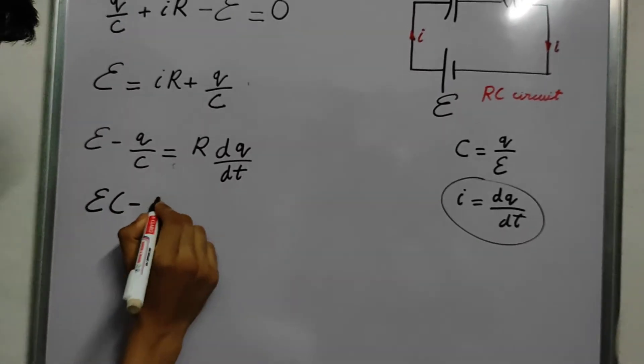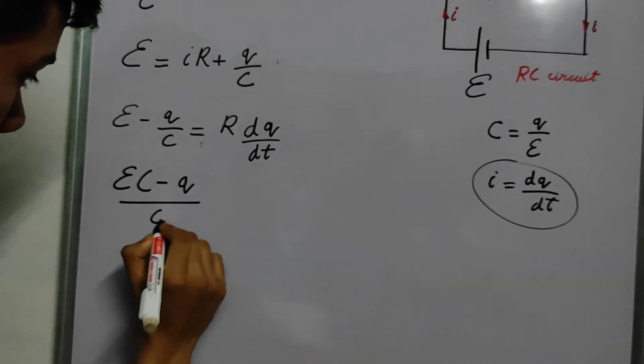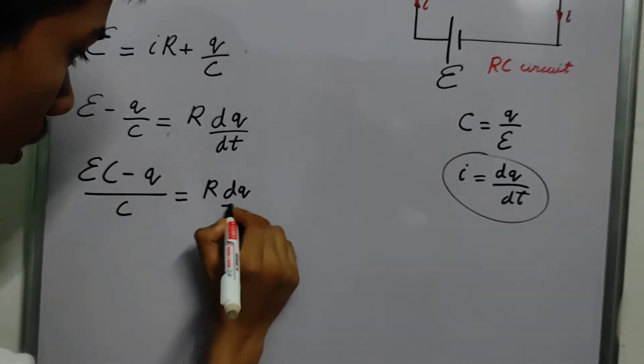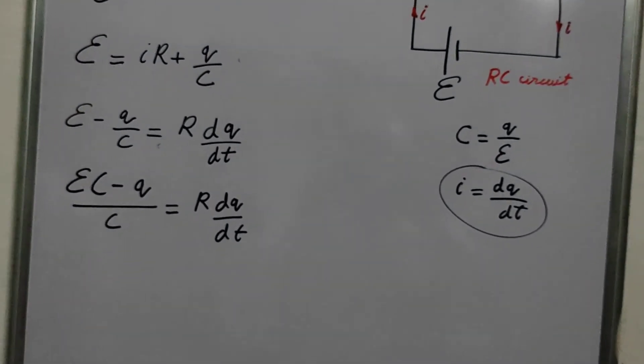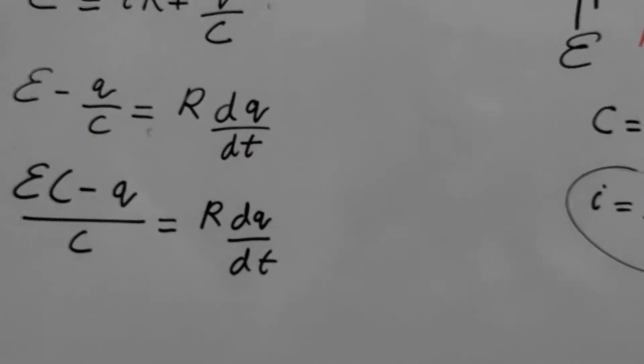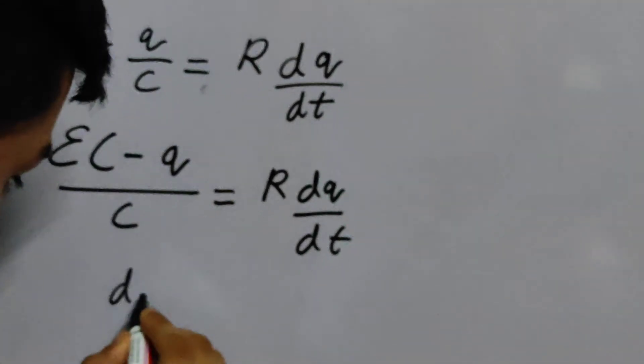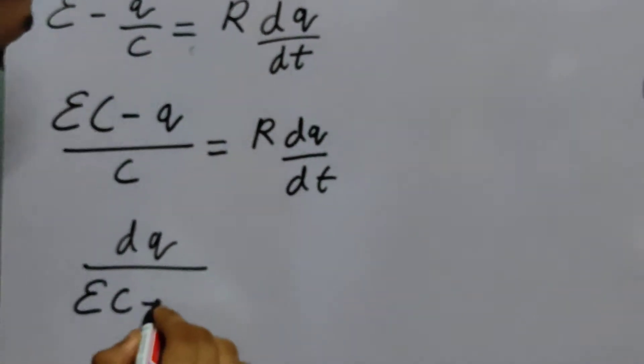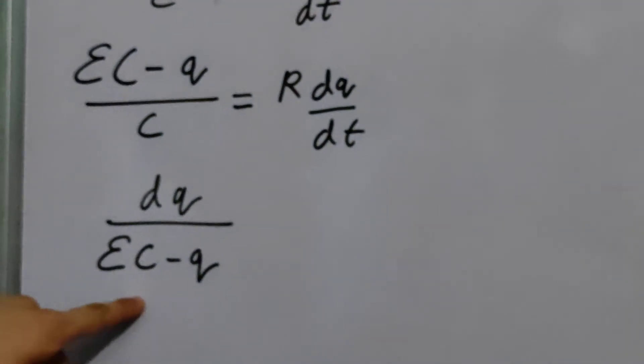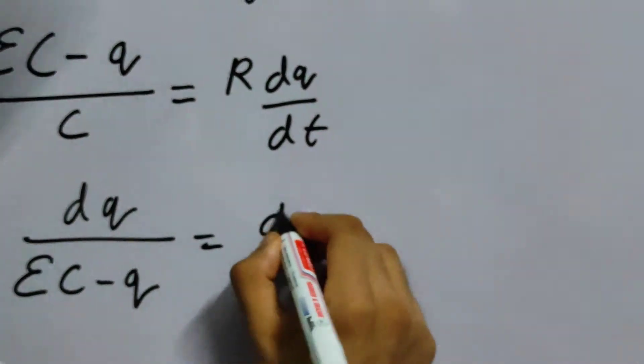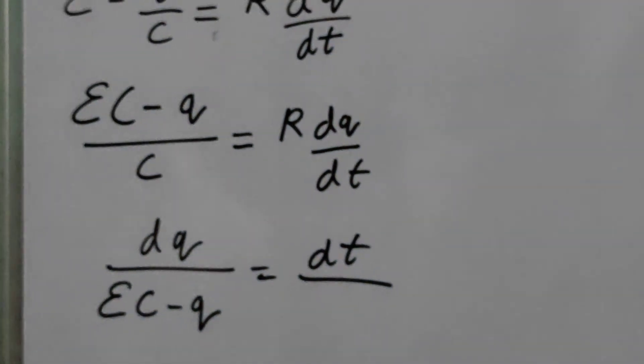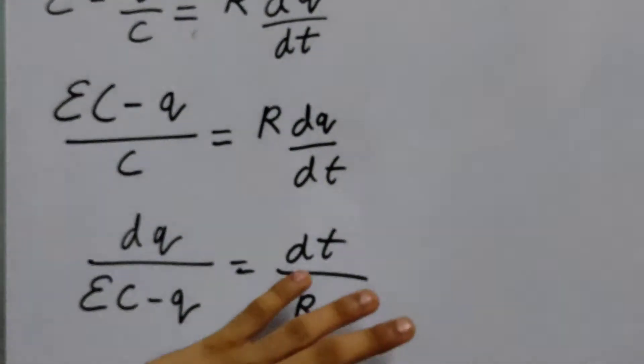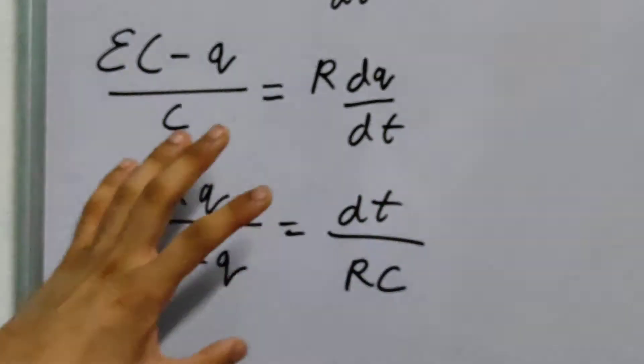Now we can simplify it. We can say R DQ by DT. Now we can cross multiply the sides and we find that DQ upon EC minus Q gives DT by RC. The resistance times the capacitance. That's what it means.